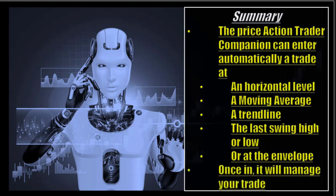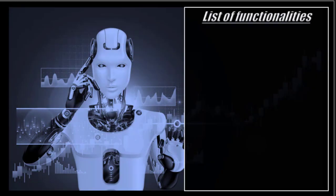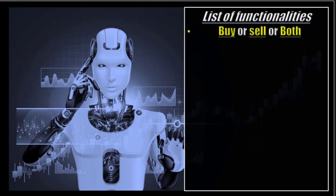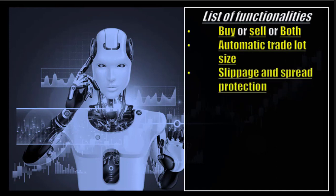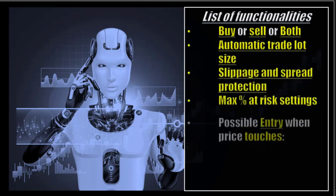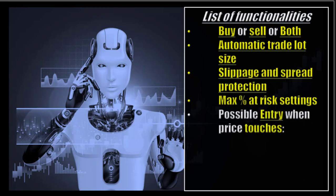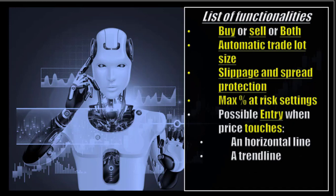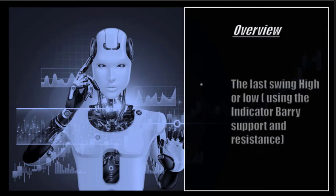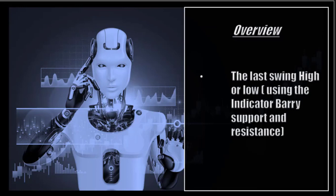Once in, it will manage your trade. List of functionalities: buy or sell or both, automatic trade lot size, slippage and spread protection, maximum percentage at risk setting, possible entry when price touches a horizontal line, a trend line, a moving average, an envelope, or the last swing high or low using the indicator Barry support and resistance.